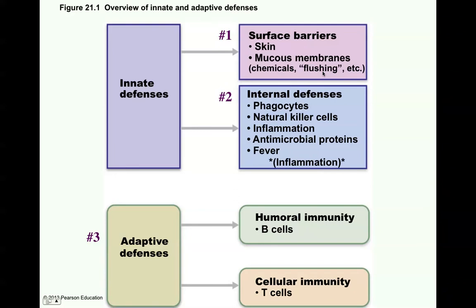Increased mucus will lead to things such as sneezing if it's in the nose, coughing if it's in the upper airway, etc. That is the surface barrier, the first line of defense. The second line of defense would be internal — if that barrier is breached. This line of defense includes phagocytes, the natural killer cells in the body, inflammation, antimicrobial proteins, and fever. All of these together form what we call inflammation.